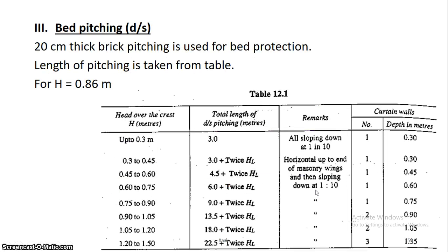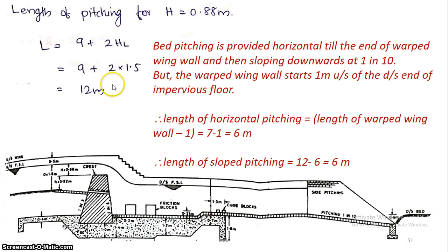Next is bed pitching. We have already designed the floor. We have an impervious floor on the upstream and downstream side, plus brick pitching. Referring to Table 12.1 of S.K. Garg, with h equal to 0.86, which falls between 0.75 and 0.9, the total length of downstream pitching equals 9 plus 2 times hl, which is 9 plus 2 times 1.5, giving 12 meters. This is the total length of bed pitching on the downstream side.